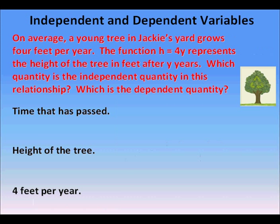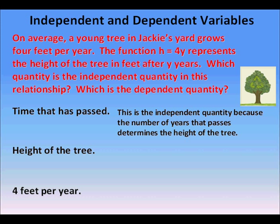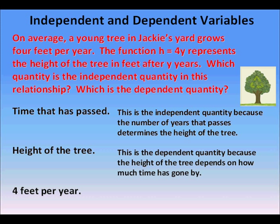Let's look at this situation. On average, a young tree in Jackie's yard grows 4 feet per year. The function h equals 4y represents the height of the tree in feet after y years. Which quantity is the independent quantity in this relation, and which is the dependent quantity? The time that has passed is the independent quantity because the number of years that have passed determines the height of the tree. The height of the tree is the dependent quantity because it depends on how much time has gone by — how much time the tree has had to grow.